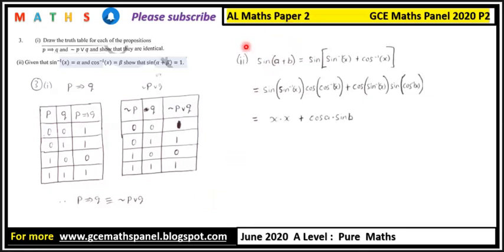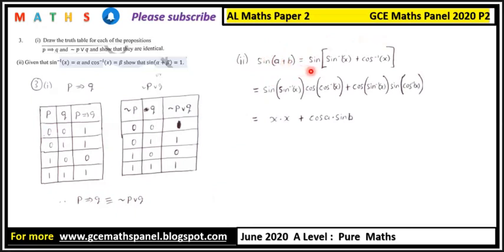We start by letting a and b represent alpha and beta respectively. So a plus b equals sine inverse of x plus cosine inverse of x, and therefore sine of (a plus b) equals sine of (sine inverse of x plus cosine inverse of x).